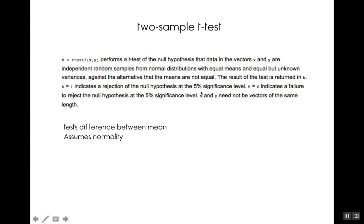The next test is the two-sample t-test. Here, x and y are two samples, and what we're trying to determine is whether the means of these samples are the same or different. We assume they are both drawn from a normal distribution. There are two variants: pooled variance or different variances — whether x and y have the same variance or different variances. The two samples do not need to be the same size.